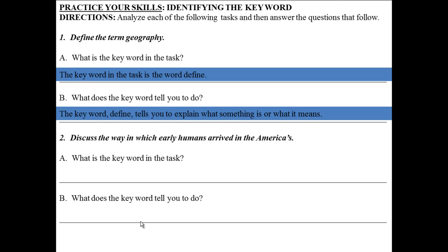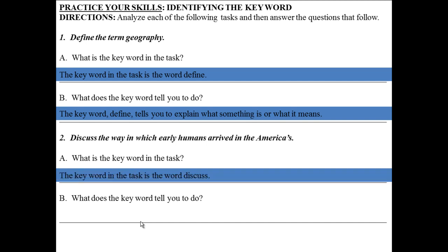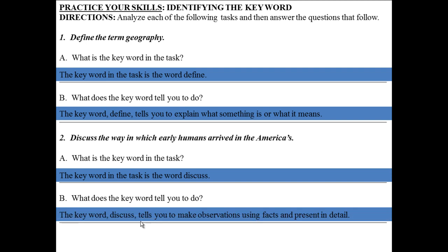Number two: discuss the way in which early humans arrived in the Americas. We're not asking you to answer that right now — instead, letter A, what is the keyword in the task? The keyword in the task is the word 'discuss.' Letter B, what does the keyword tell you to do? The keyword discuss tells you to make observations using facts and present in detail — so you'll be giving details, not just making a list, which would not answer this question.